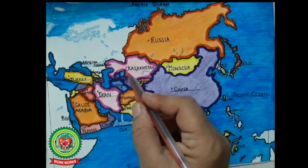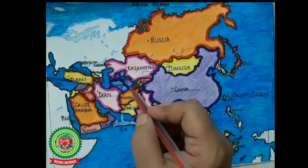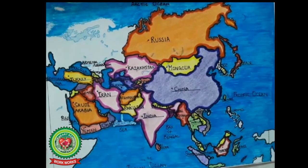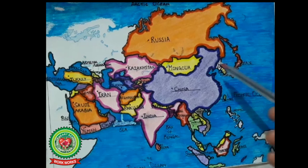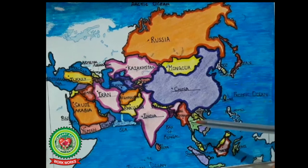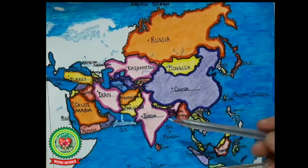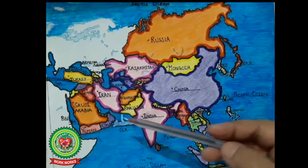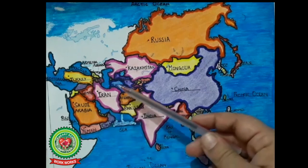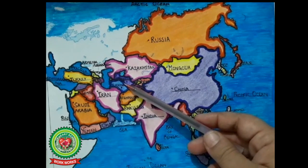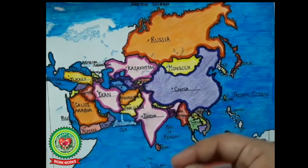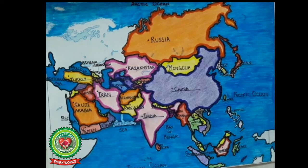With that we have completed all eight countries of the USSR republics. Students, you have to fill in the political map of Asia — East Asia, Southeast Asia, South Asia, West Asia, and the USSR republics. You also have to revise all the countries and capitals and do the related back exercise. Have a good day.